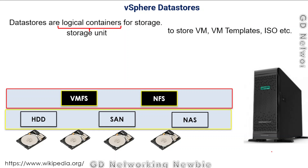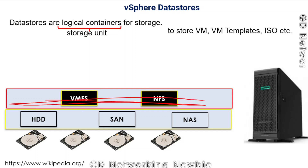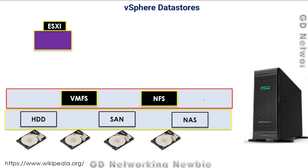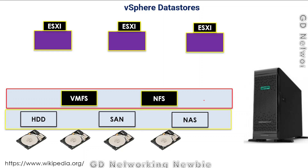Once we have storage, we need some formatting — we need some file system. We can have VMFS or NFS. Now, once we have this datastore — let's say this is a complete datastore, from here to here — this datastore can be used by a single ESXi host, which we have discussed and installed in previous videos, or it can be shared by multiple ESXi hosts.